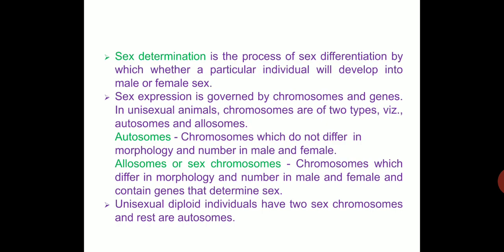In unisexual animals, chromosomes are of two types: autosomes and allosomes. Autosomes are chromosomes which do not differ in morphology and number in male and female; these chromosomes control the vegetative characters of an organism. Allosomes, or sex chromosomes, are chromosomes which differ in morphology and number in male and female, containing genes that determine the sex. The sex chromosome decides whether the individual will be male or female.